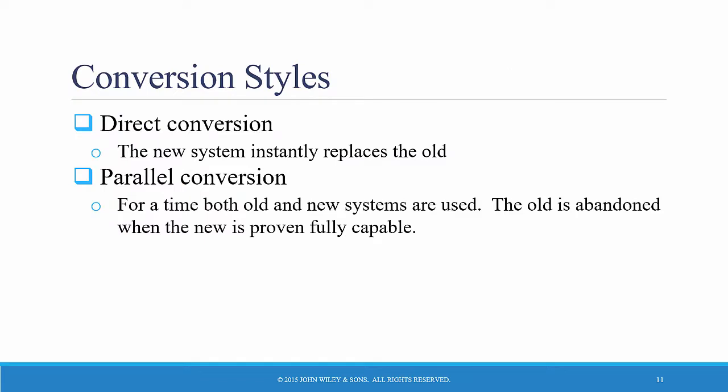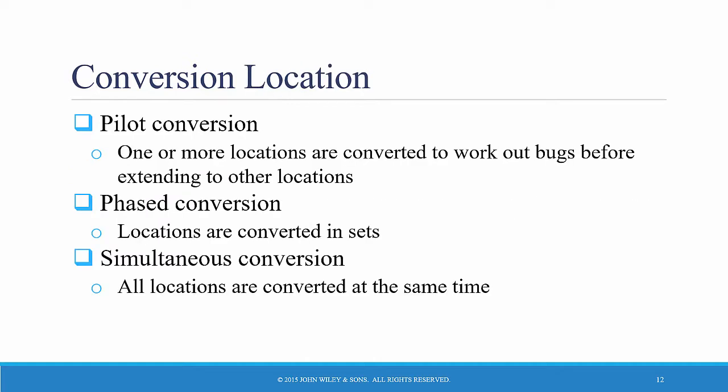With parallel conversion, both the old and the new systems are used simultaneously for a period of time. Parallel conversion reduces the risk by providing a fallback position if major problems should occur. The location of the conversion is also a relevant consideration. The new system can be introduced to different parts of the organization at different times, or introduced throughout the organization at the same time.